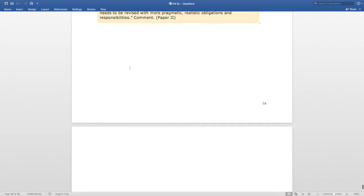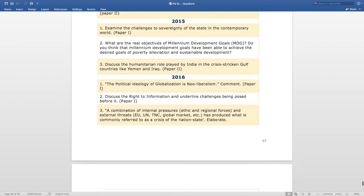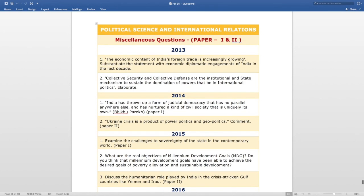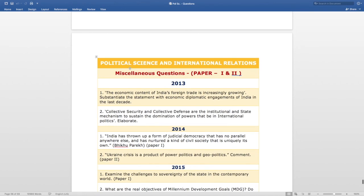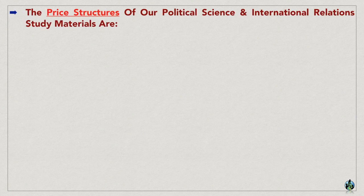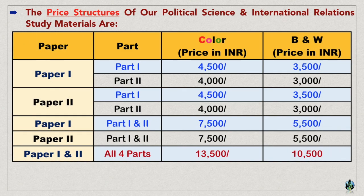So that covers all the miscellaneous questions asked in the last five years, especially from 2013 to 2017. This will definitely give you an idea of how to prepare for such miscellaneous questions in advance. Besides, comprehensive study materials for Political Science and International Relations are also available. The study material is unique not only in terms of content but also in terms of presentation, featuring maps, images, graphs and tables.